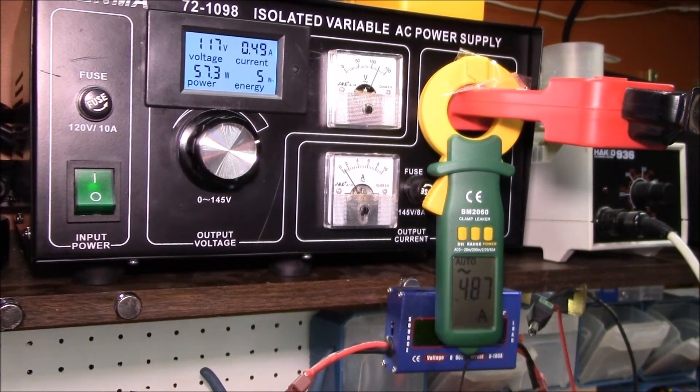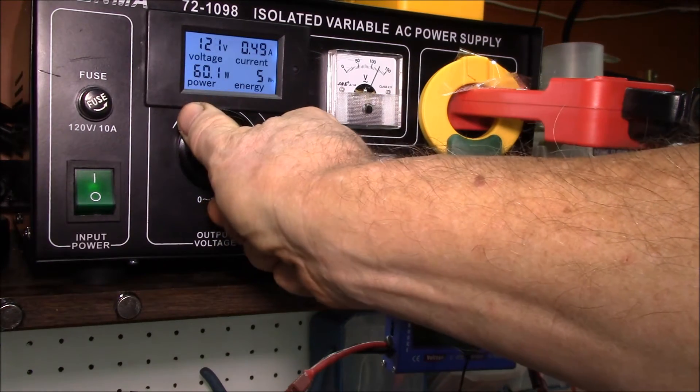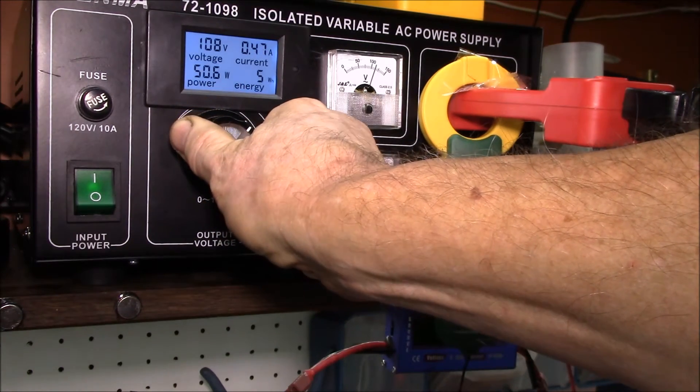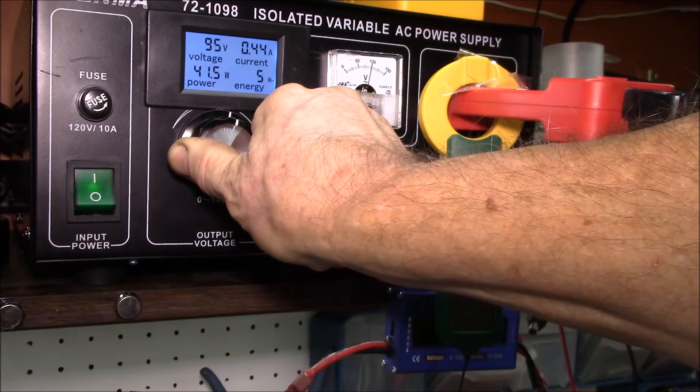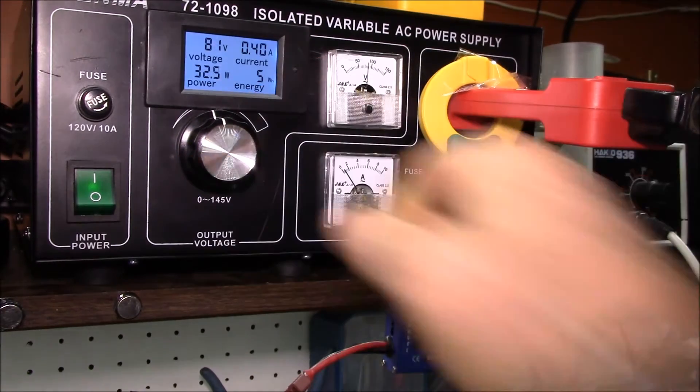Right now it's reading 498 milliamps and this meter is reading half an amp. Let's go down in voltage to drop the current. We can get down to where it just switches to four tenths - there we go, 400 milliamps, and that one's reading 401. I think that's pretty good.